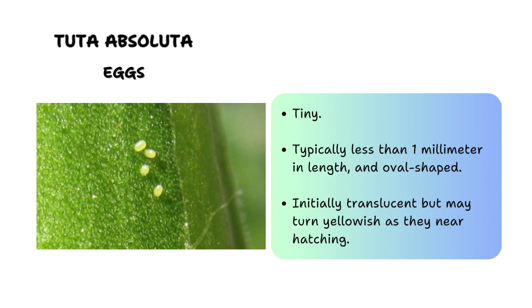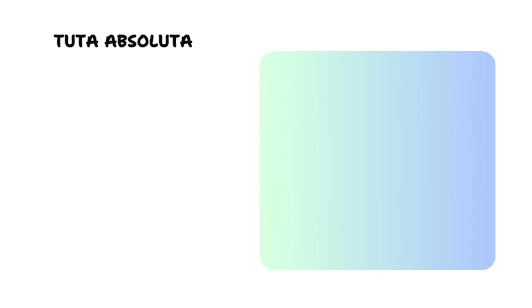Tuta absoluta eggs are tiny and oval-shaped, measuring about 0.5 millimeters in length. They are usually laid singly on the undersides of leaves, although clusters may sometimes be observed. Initially the eggs are translucent white but gradually turn yellowish as they mature. The egg stage typically lasts between three to seven days depending on environmental conditions.